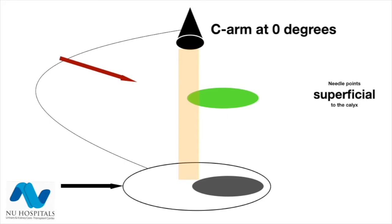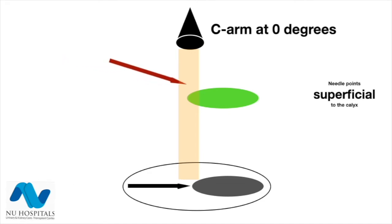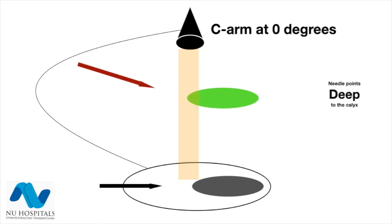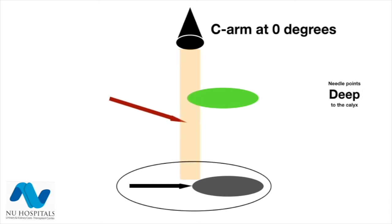Unfortunately, if you keep the C-arm only at zero degrees, you get the exact same image if the needle reaches superficial to the calyx or if it reaches deep.